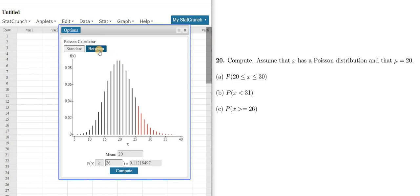So for part A, we had to click the between probability. That's the answer to part A. For part B and C, we had to go back to Standard and switch the appropriate inequality signs. I hope this video has been helpful.